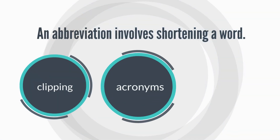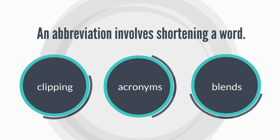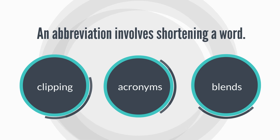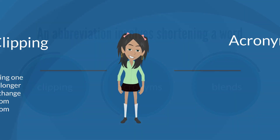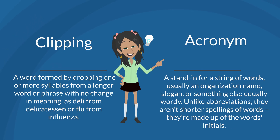An abbreviation involves shortening a word. We do this in three main ways: clipping, acronyms, and blends. Clipping is a word formed by dropping one or more syllables from a longer word or phrase with no change in meaning — for example, 'deli' from 'delicatessen,' or 'flu' from 'influenza.'